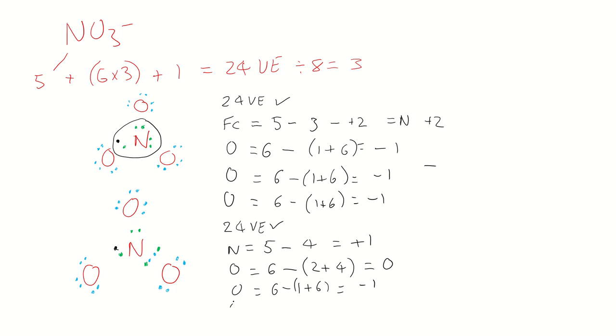So if we do the mathematics again, the overall charge is going to be a minus one, which satisfies our molecule here. Now this makes more sense because we've got eight electrons with the central atom. We've still got our octet here, we've got our octet here, we've got our octet here, we've got the extra electron there.